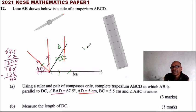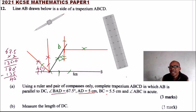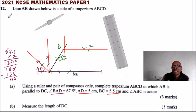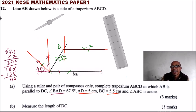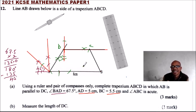A line perpendicular to that perpendicular will be parallel to AB. So using this point, make a mark there and a mark there, and you come up with a line parallel to AB. Since we have been given the length of BC as 5.5 centimeters, extend your compass to 5.5 centimeters — that is where you have point C. Then draw line DC. That is our line DC, giving us the completed trapezium.